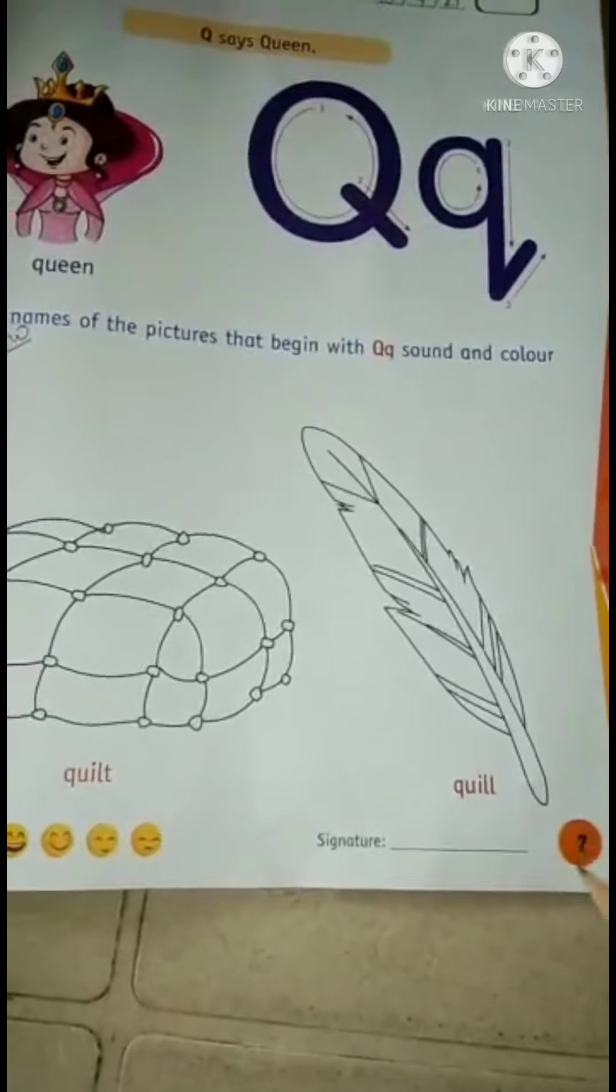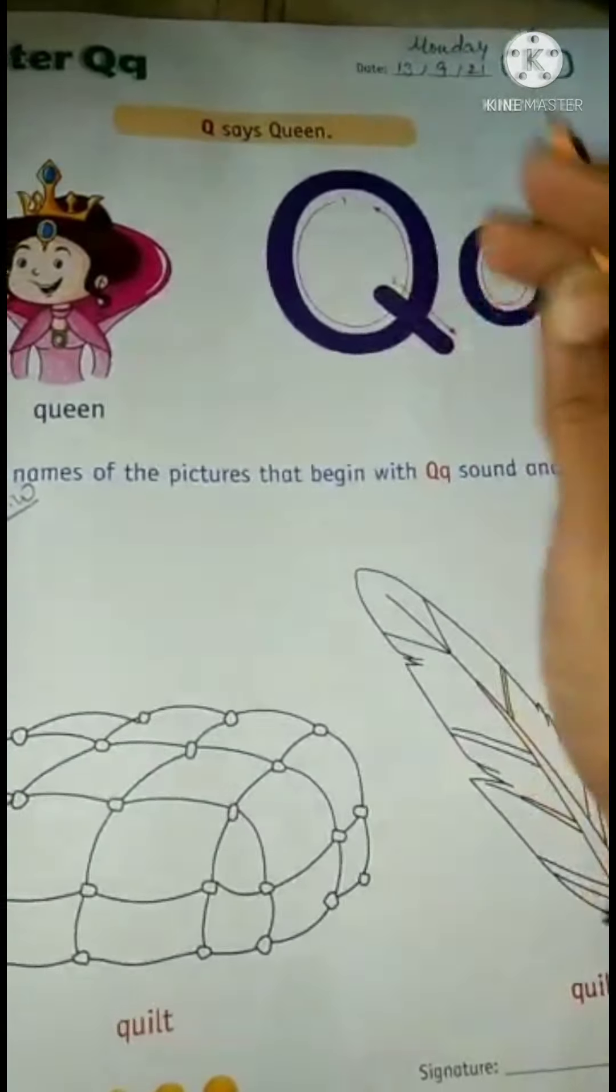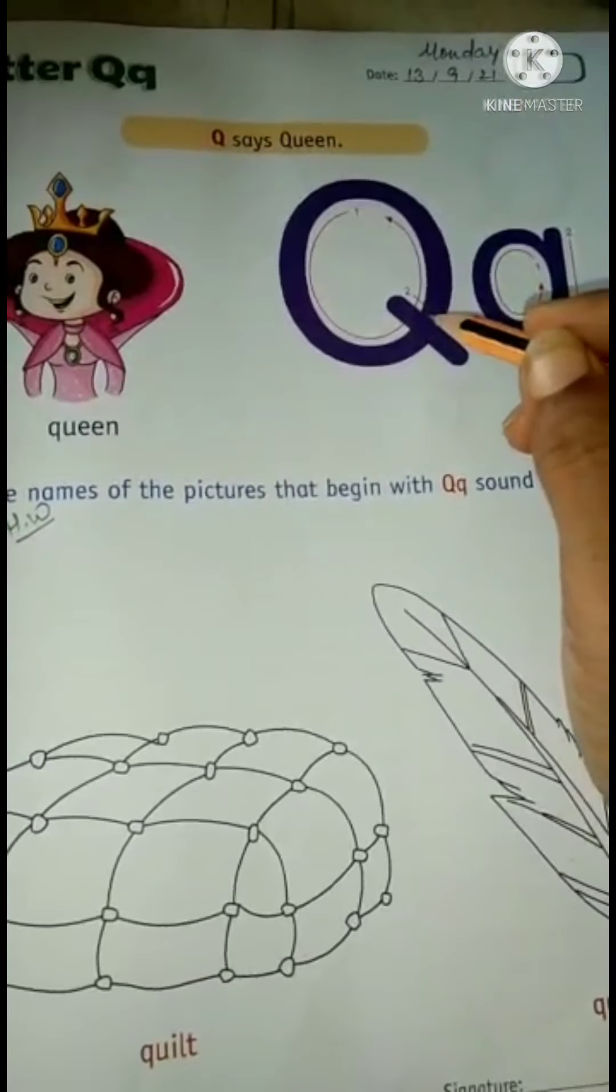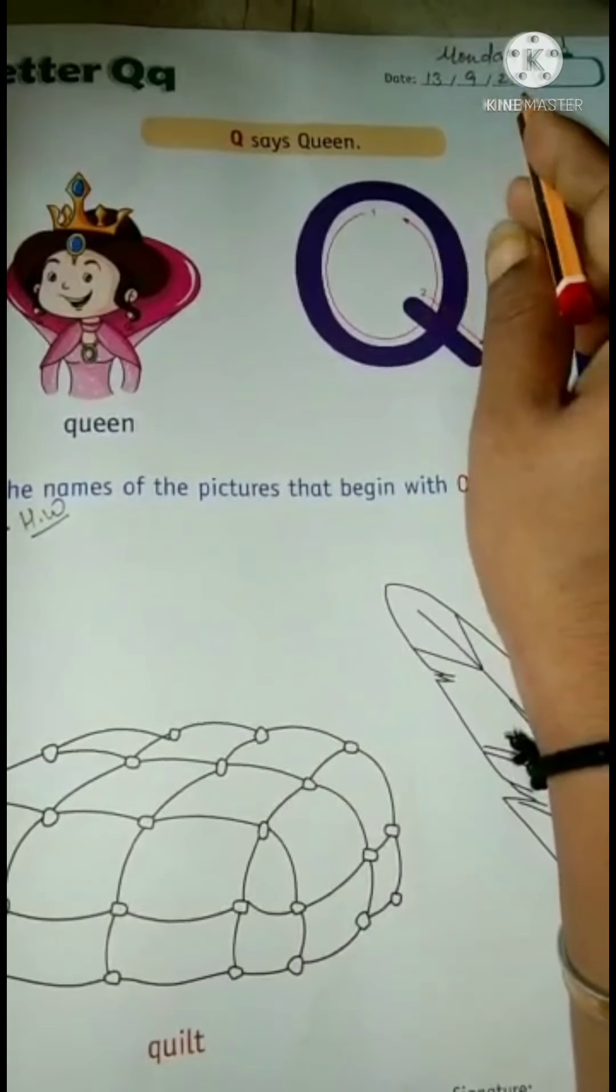Jaiswami Narayan. See in book number 5 on page number 7. It's capital letter Q and small letter Q. We will learn to trace and write, but before that we will write the date. It is 13th September 21.